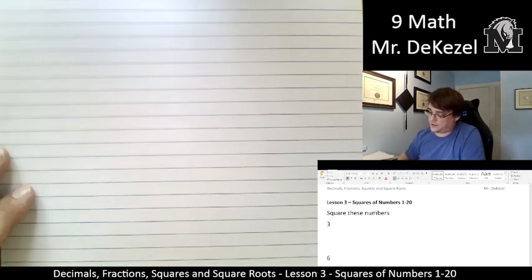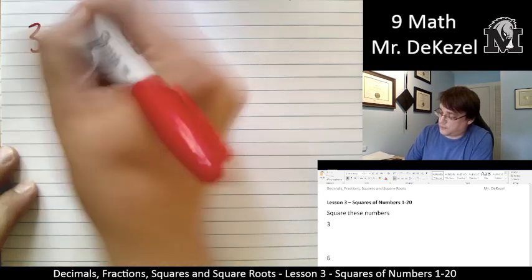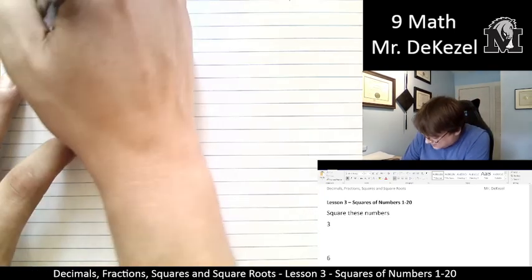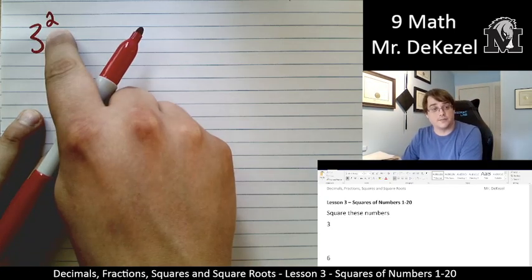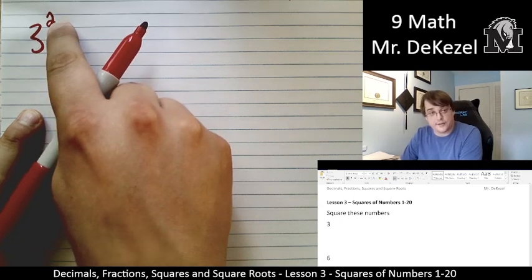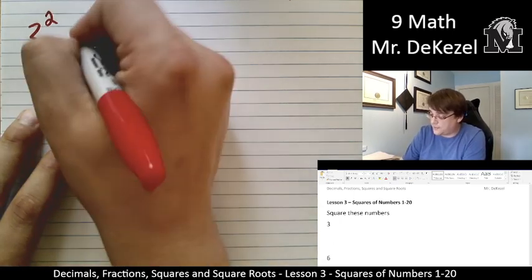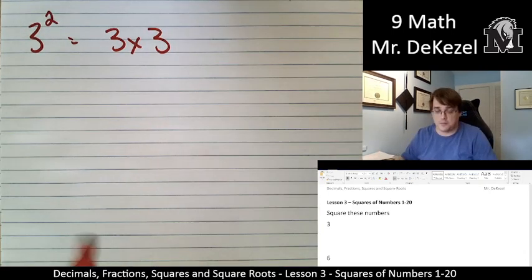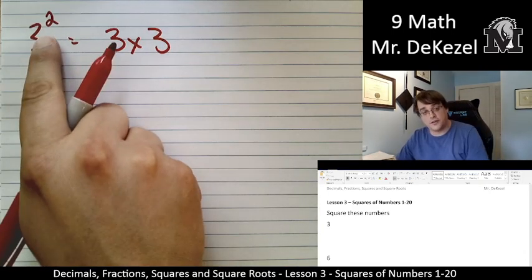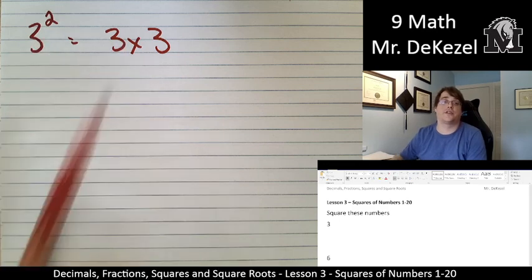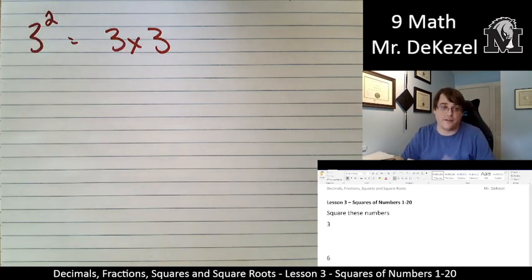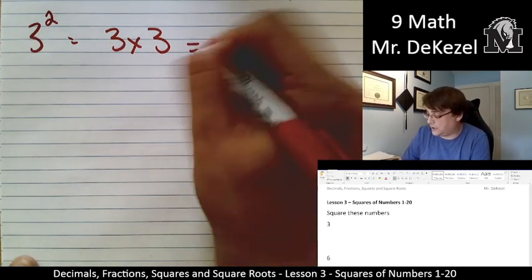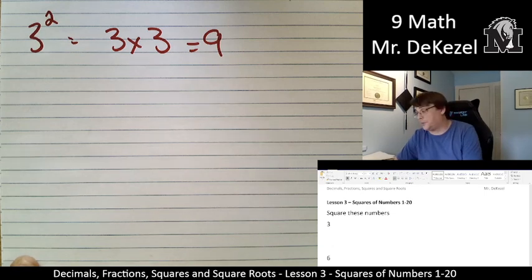First one we have is 3. So when we're talking about squaring, that's this little symbol here. So 3 squared, 3 to the power of 2, and what that represents is 3 times 3. So if I'm squaring a number, or you see 3 to the power of 2, or anything to the power of 2, you're going to multiply that number by itself. 3 times 3 is 9. You should be familiar with that.